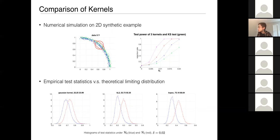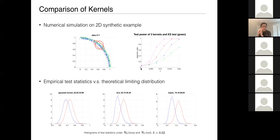Question: what is δ — is that how much shift there is? Answer: Yes. In the numerical example, δ measures the shift of the density. When δ=0 the two densities are the same. The testing level is usually set to 0.05 to control false positives. It's a kind of departure parameter — at zero they are the same, and as it increases you're changing the density according to a direction g. Larger departure means everyone gets power; the competition is at small departure where you start to see the difference earlier with the same amount of data.